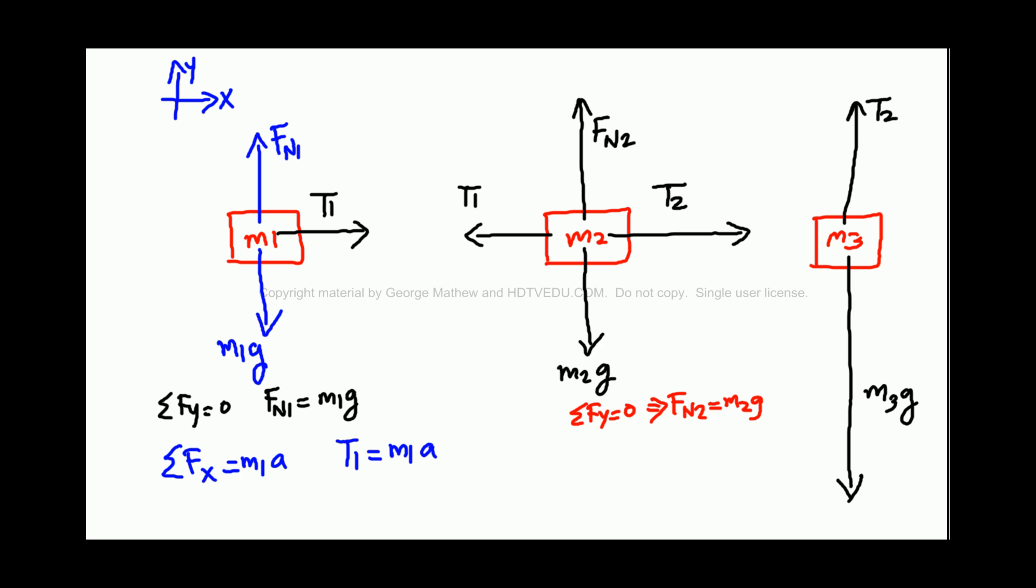For the horizontal, it is accelerating to the right. So what does that mean? The bigger force is to the right. T2 is to the right. The opposing force is T1 to the left. So you say, bigger force minus small force equals net force. So you say, net force along the horizontal is equal to M2a and that gives us T2, there is no friction, T2 minus T1 equals M2a.